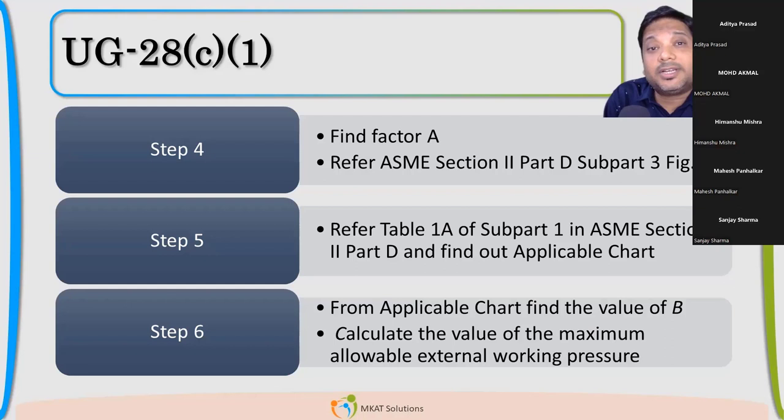In subpart 3, we will find this bigger G, which we call as geometrical chart. Why we call it geometrical chart? Because it's completely based on the dimensions. L by D ratio, D0 by T ratio. These are all dimensions. Based on the geometry of that cylinder, we will be able to calculate this factor A. We don't need the material. We don't need pressure or anything.